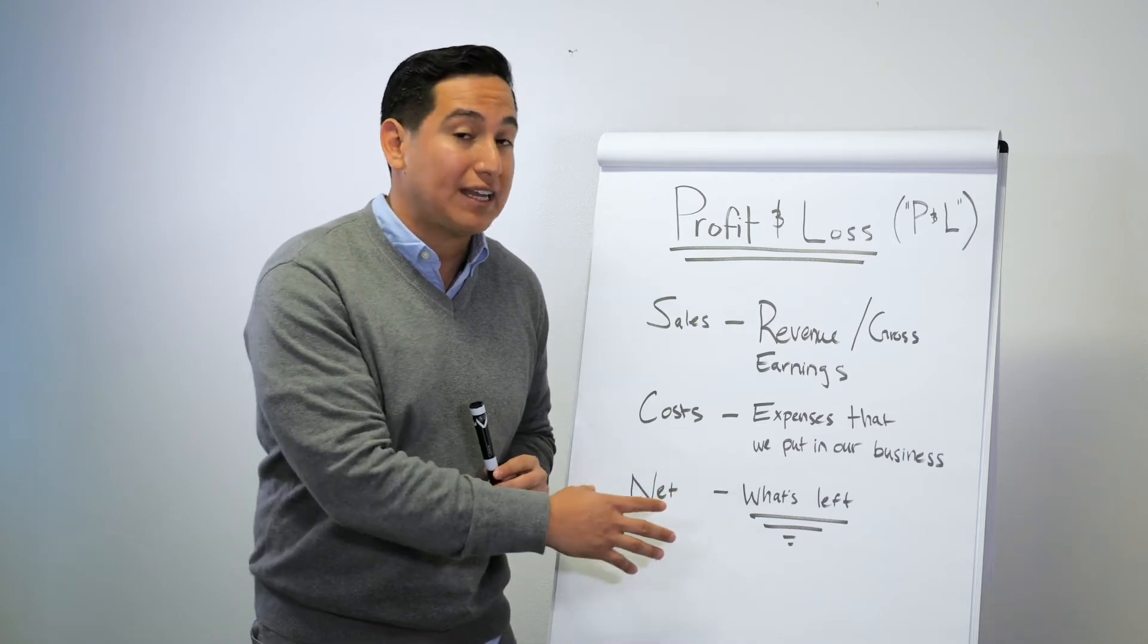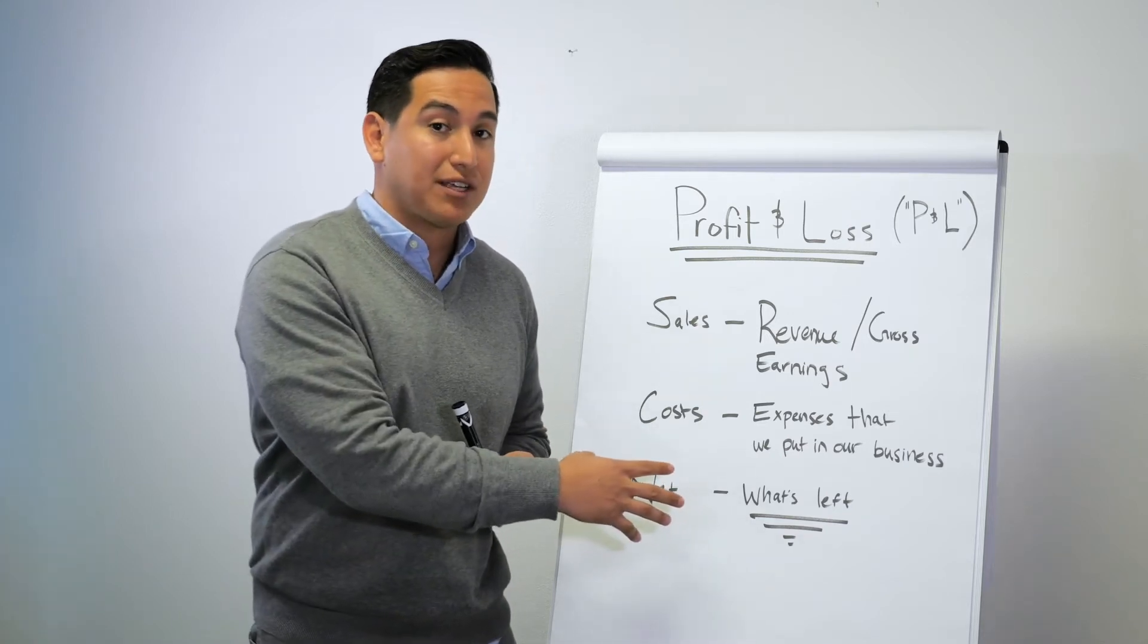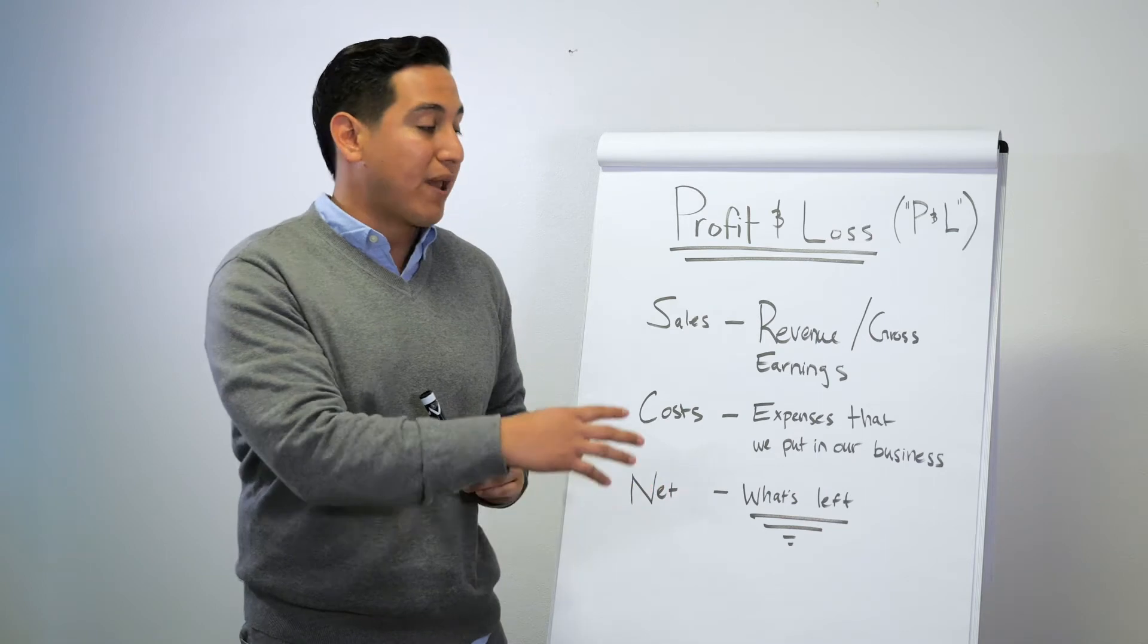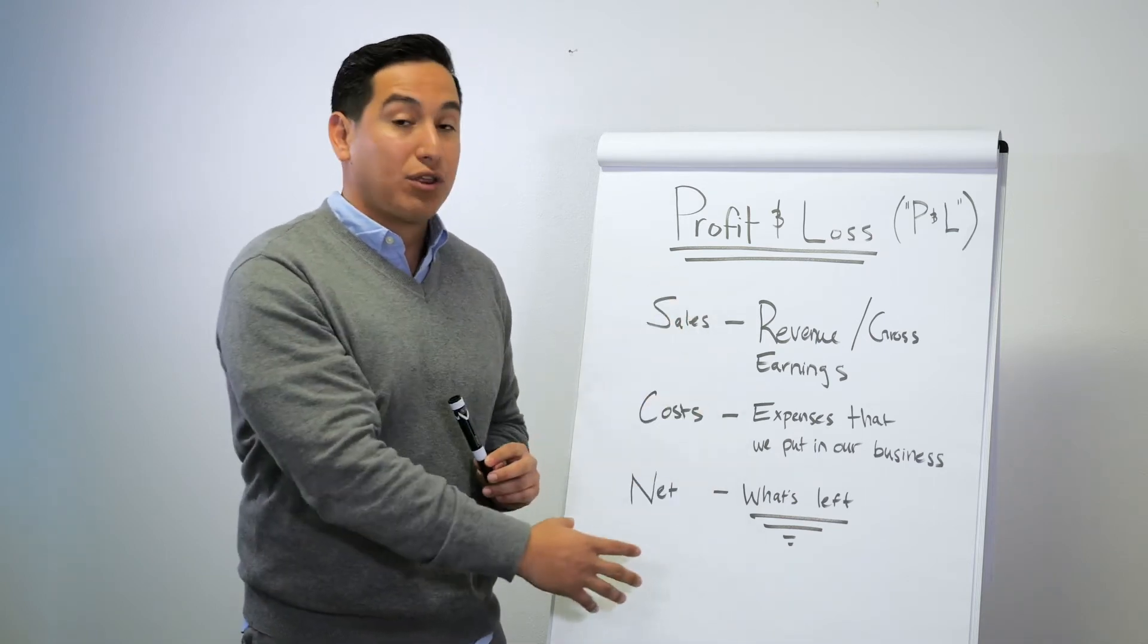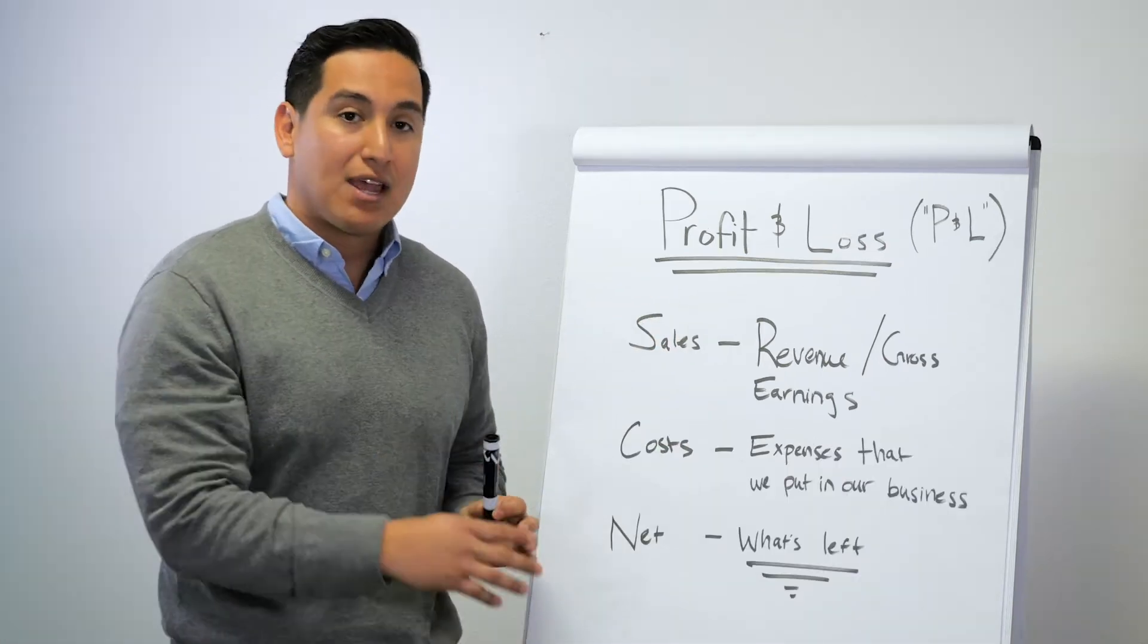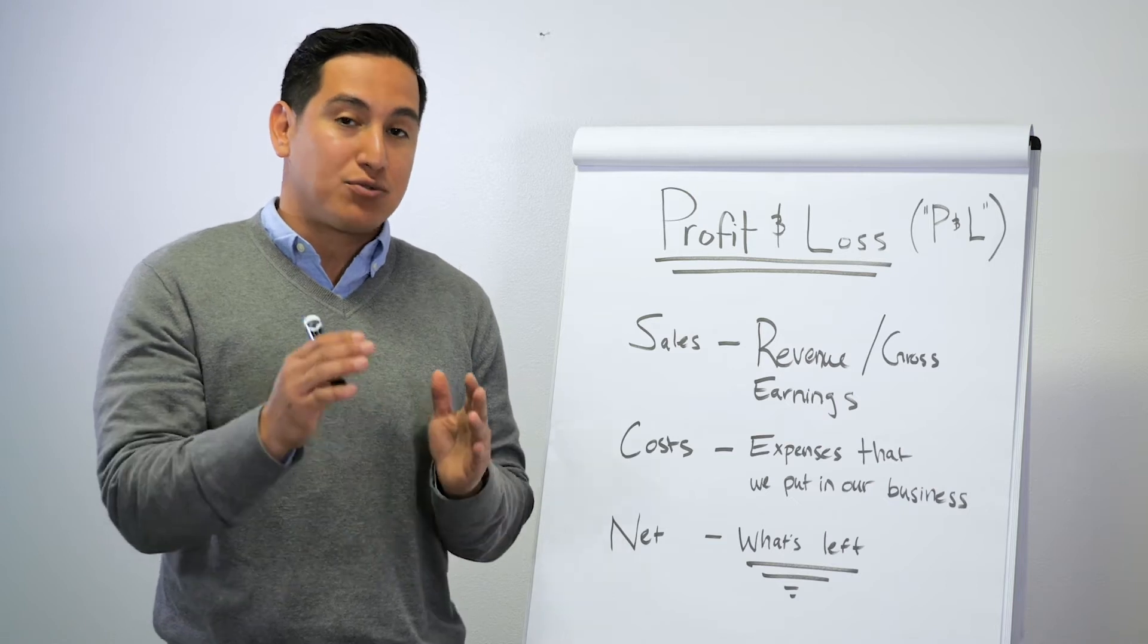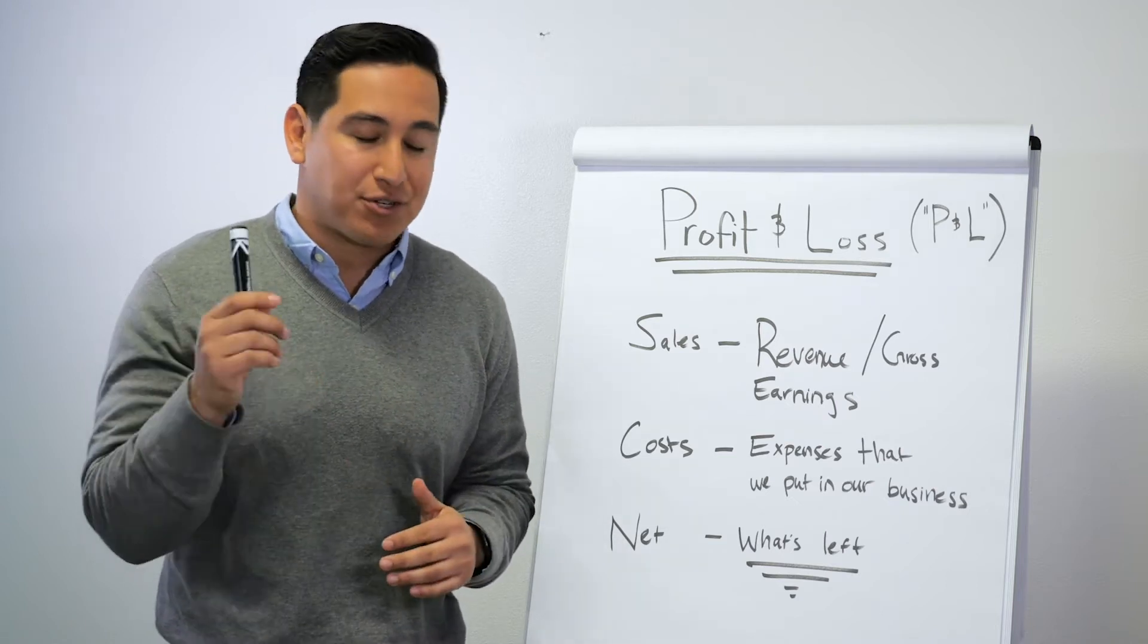This is what a bank is going to give a loan on. This is what the taxing authorities are going to assess tax on. So get very comfortable with the way things flow here. We're going to get into an example here to really drive home this point. So let's jump right into it.